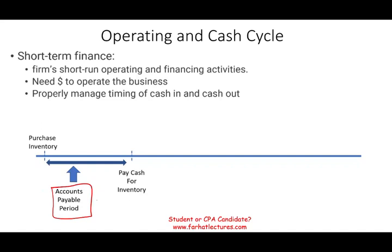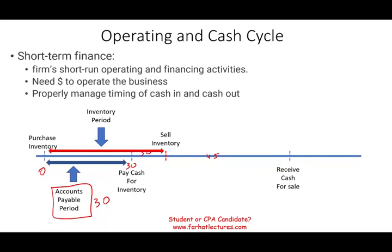For this illustration, we'll assume the accounts payable period is 30 days — at day zero you purchase, and after 30 days you pay your bill. You purchased the inventory to sell it, and let's assume it takes an additional 30 days to sell it. From the time you bought it to the time you sold it, we call this the inventory period — that's 60 days total for this illustration.